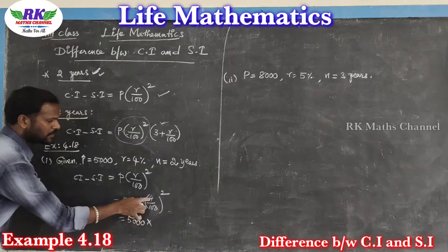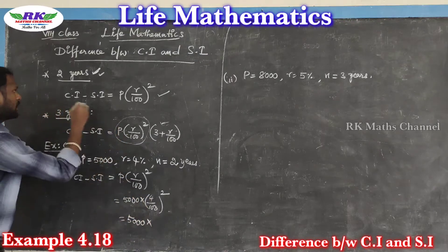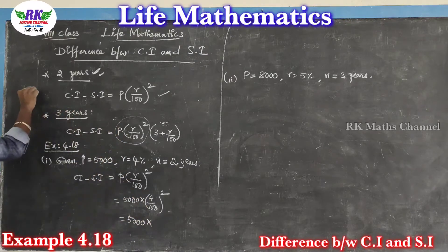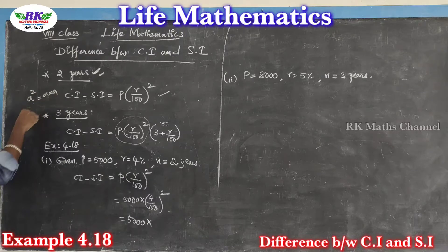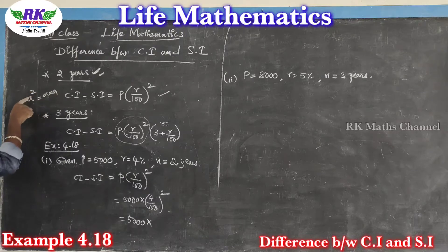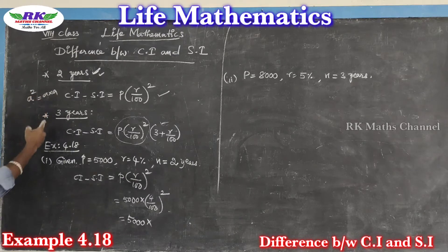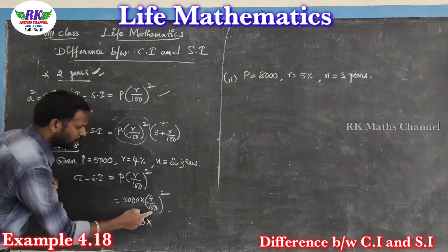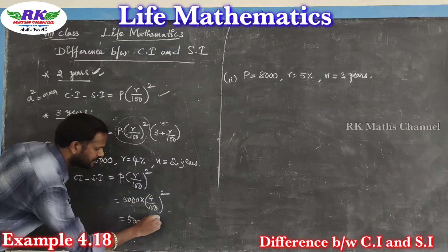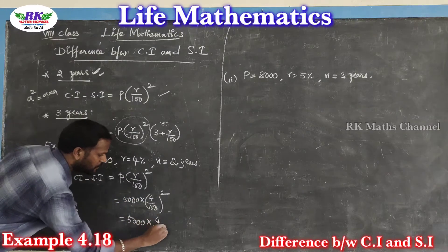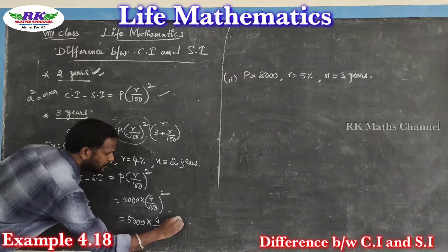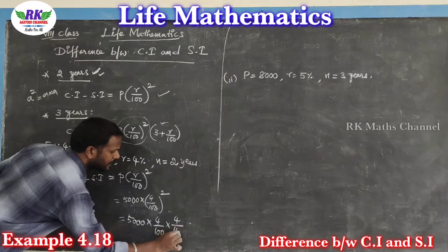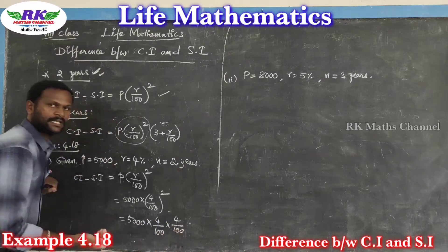So 5,000 into — A squared means A into A — for two years, 4 by 100 whole square means 4 by 100 into 4 by 100.